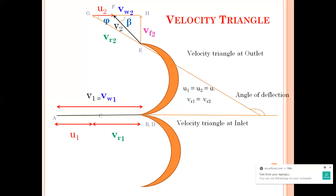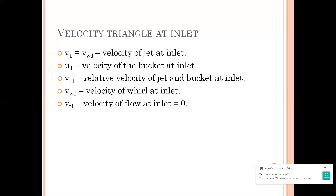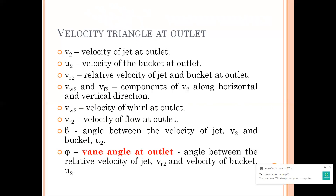Next we will be calculating the force, then the work done, and then the efficiency, as we have done in the previous classes. Your v1 is equal to vw1; your velocity of jet at inlet is u1; vr1 is the relative velocity; vw1 is velocity of whirl; and vf1 is equal to zero. At outlet again the same terms apply — whenever you draw the velocity triangle please write each element, as it is important.